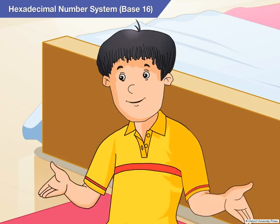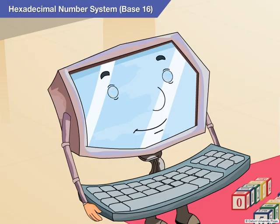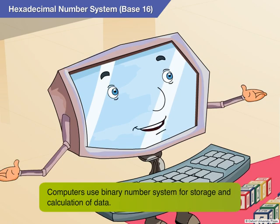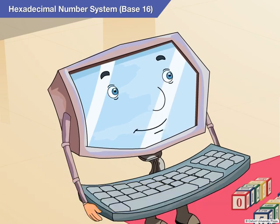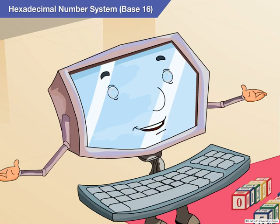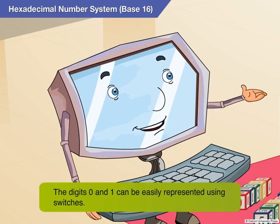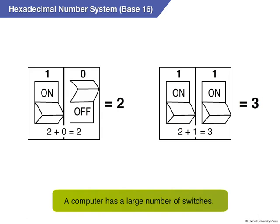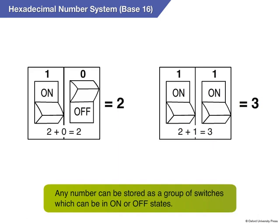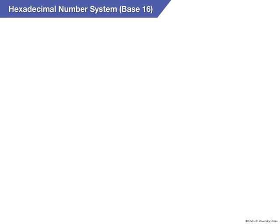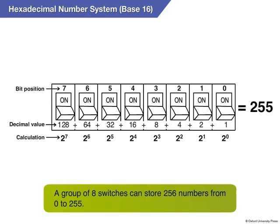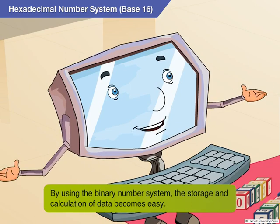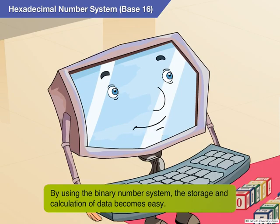Why is the binary number system used specifically in designing computers? Computers use the binary number system for storage and calculation of data. The binary number system consists of two digits, 0 and 1. These digits can be easily represented using switches — a switch in the on state represents 1, while a switch in the off state represents 0. A computer has a large number of switches, and any number can be stored as a group of switches in on or off states. For example, a group of 8 switches can store 256 numbers from 0 to 255. Thus, by using the binary number system, the storage and calculation of data becomes easy.